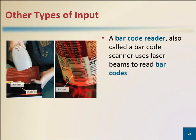Manufacturers print a barcode either on a product's package or on a label that is affixed to a product. The barcode represents data that identifies the manufacturer and the item.